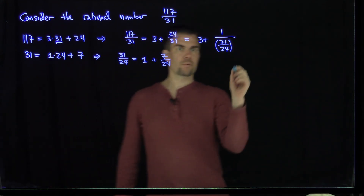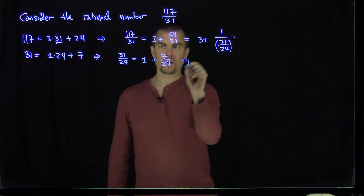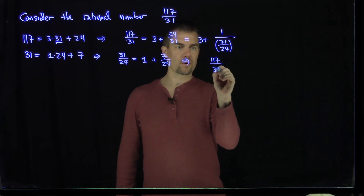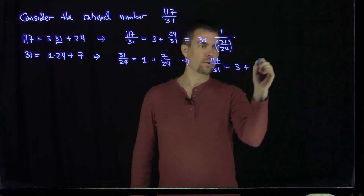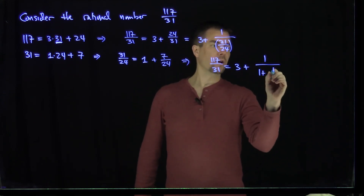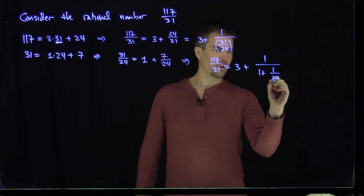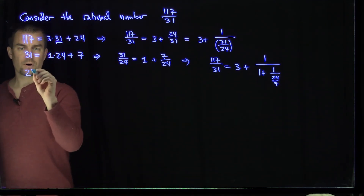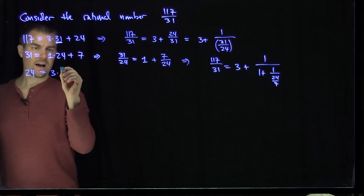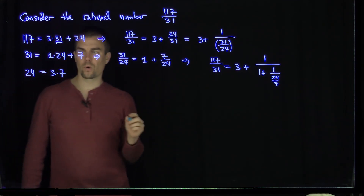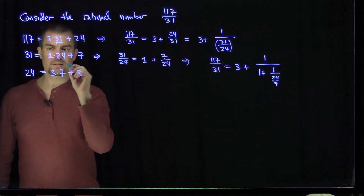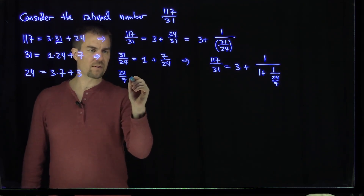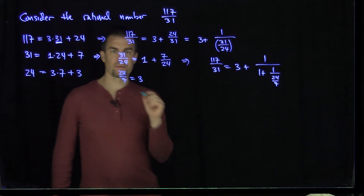So now we can take our original problem. This tells me that 117 over 31 is equal to 3 plus 1 over 1 plus 1 over 24 over 7. And now we can play the same game with 24 and 7. So 24 is three copies of 7, because that gives me 21, and then plus 3 left over.